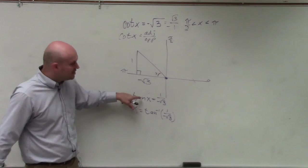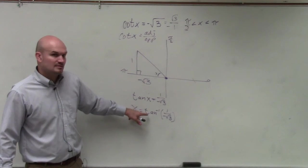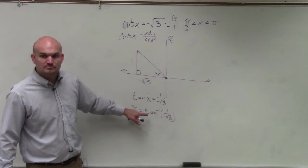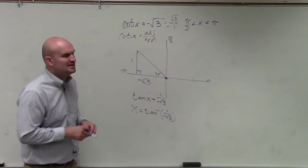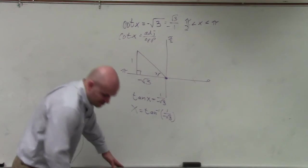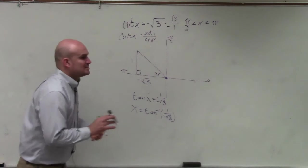To undo tangent, you'd have to take the tangent inverse. Type that in. Somebody type that in your calculator. Let's see what the answer is. Don't tell me what it is. Just keep it down, because I'll tell you what the answer is without a calculator.